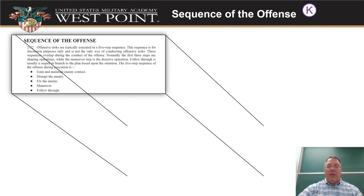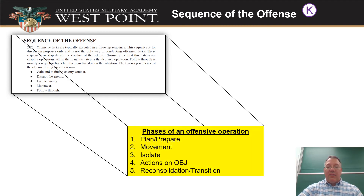At the platoon level, there are five phases of a mission. Phase one is plan and prepare, including reconnaissance. Phase two is movement toward the objective. Phase three is isolating the objective — cutting the enemy off from their friendly forces so reinforcements can't reach them.